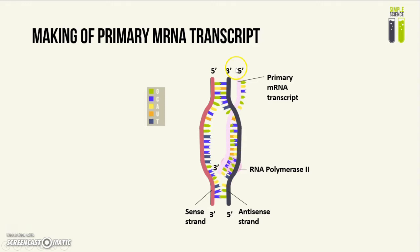At the 5' end, you will see a guanine base, and this is called a 5' cap. This apparently helps to prevent the RNA molecule from being degraded during synthesis. Later on, it also helps to indicate the starting point for the translation of the mRNA molecule into protein.